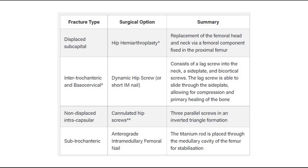The specific surgical procedures depend on the type of fracture. The options are hip hemiarthroplasty, dynamic hip screw, cannulated hip screw, and anterograde intramedullary femoral nail.